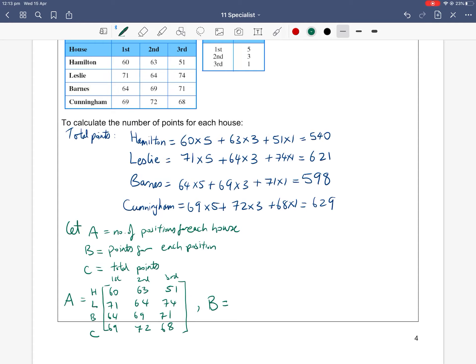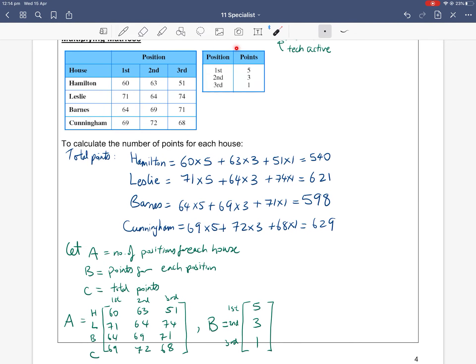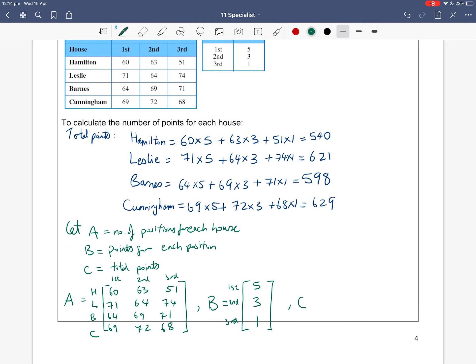And then B was the matrix of the number of points for each position. So there are three positions—first, second, and third. And then the first got five points, the second got three points, and the third person got one point. Again, all I did was turn this second table into a matrix formation, so that I have a three by one matrix, because it's three rows by one column.